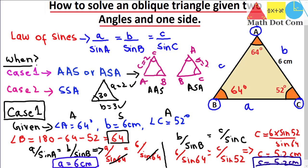We have now found all three sides and all three angles using the law of sines. We discussed case 1 in today's lecture. In the next lecture, we will discuss case 2 — how to use the law of sines when given two sides and one non-included angle, including what a non-included angle means. Stay tuned. That's all from today's lecture. Thank you.